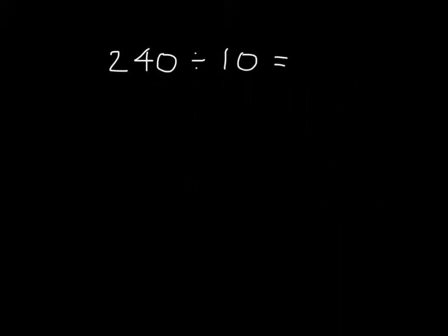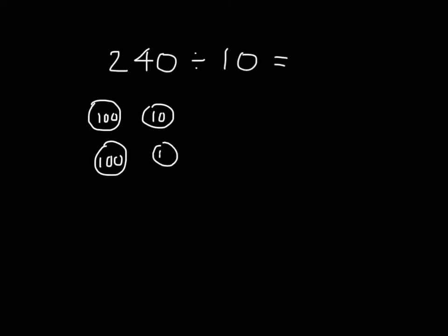Here's another problem: 240 divided by 10. We'll go ahead and break apart 240 into unit form — it would be 2 hundreds and 4 tens. This time, however, we'll look at it with unit disks. That's 2 hundreds and then we have 4 tens. So again, we broke apart 240 into unit form, and we're dividing by 10.